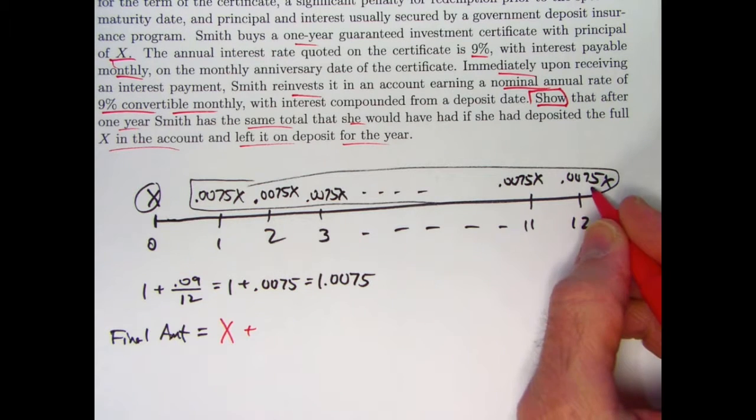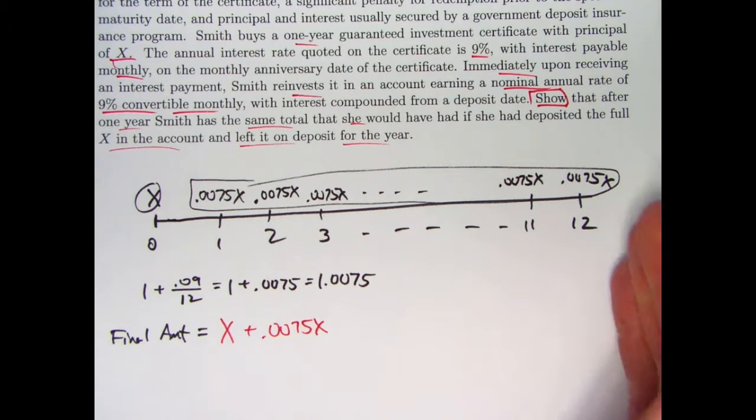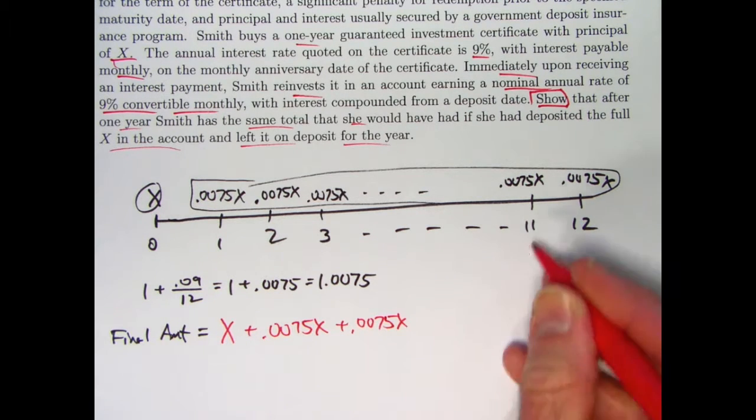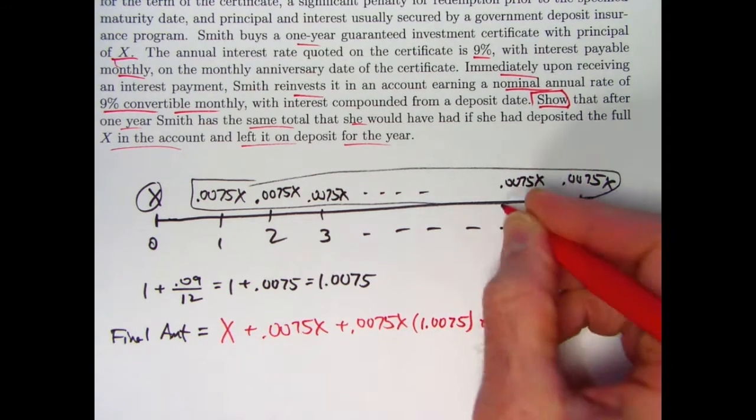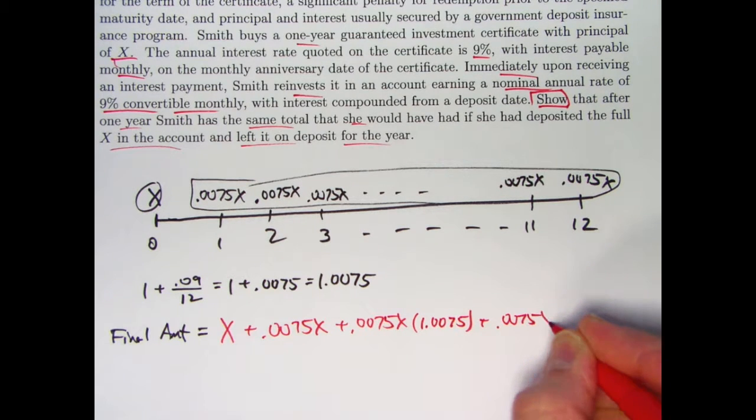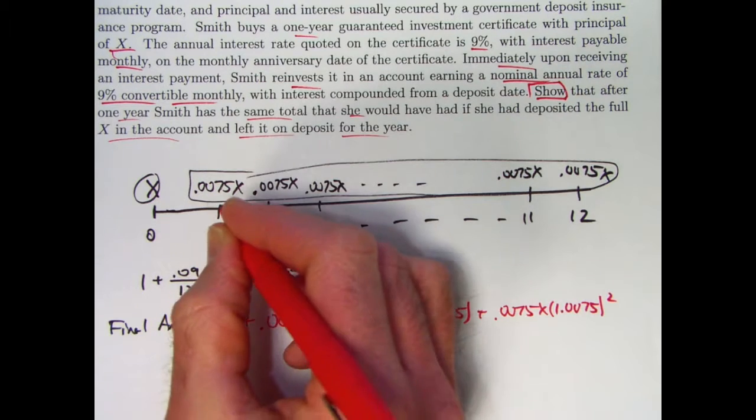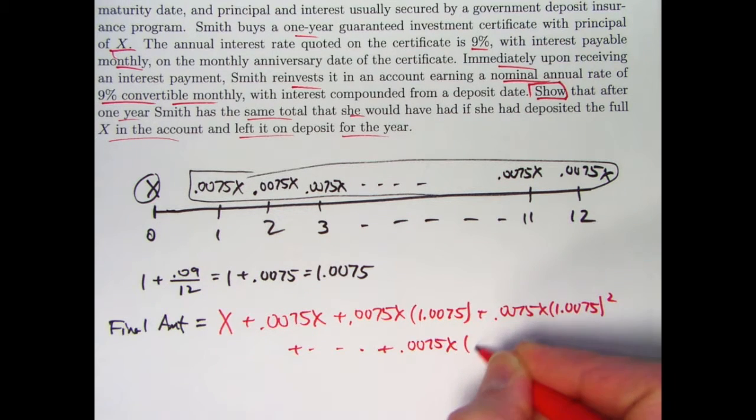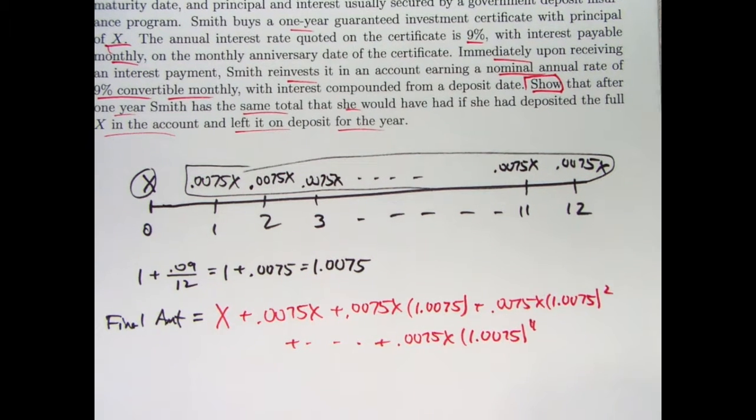Working backwards from right to left, you've got this 0.0075X at time 12 that doesn't accumulate anymore because it's already at time 12. At time 11, you've got 0.0075X that accumulates for one month, so it gets multiplied by the growth factor 1.0075. At time 10, you have 0.0075X that accumulates for two months, so you multiply it by 1.0075 squared, et cetera. At time 1, coming all the way back to the left, you've got that 0.0075X, and that accumulates for 11 months, so you multiply it by 1.0075 to the 11th power.